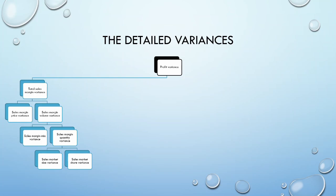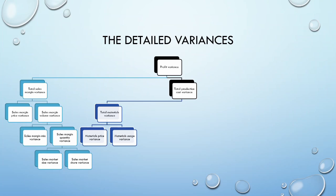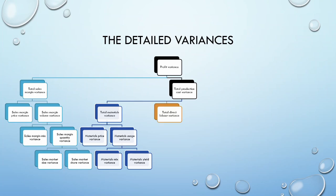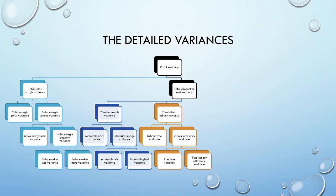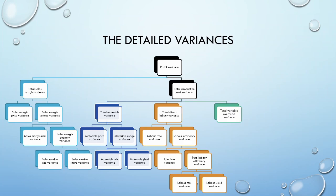Watch out for the differences between variable and absorption costing when calculating these variances. Our next major category is the production cost variances. These variances can be separated for each type of production cost. So we will get our materials variances, which are broken down into the price and usage variances. If we have multiple raw materials that can be interchanged, we can break the usage variance into a mix and yield variance. Next, still under our production cost variances, we have our labor variances. These can be broken down into the labor rate and efficiency variances. Our efficiency variance can be further broken down into an idle time and pure labor efficiency variance.